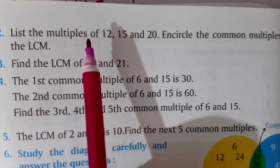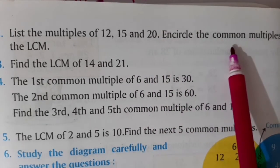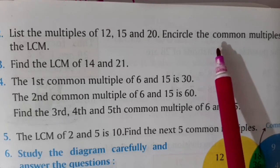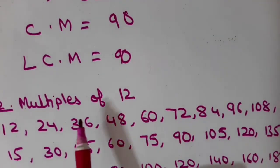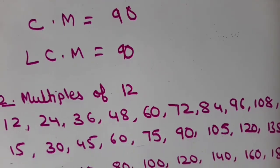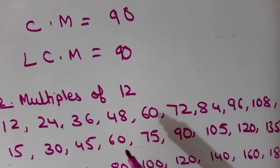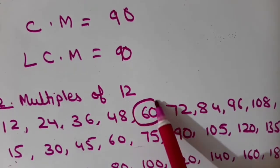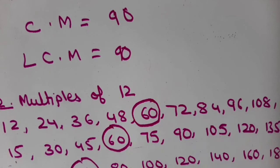Question number 2: list the multiples of 12, 15 and 20. Encircle the common multiples and then find the LCM. First I will write the multiples of 12, then the first ten multiples of 15, and then the first ten multiples of 20. Now I will find the common multiples — the number that is common in all three. You can see 60 is common in all three, so the first common multiple is 60.